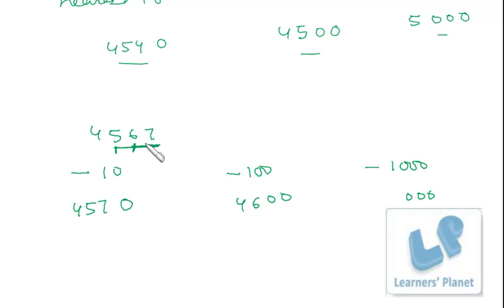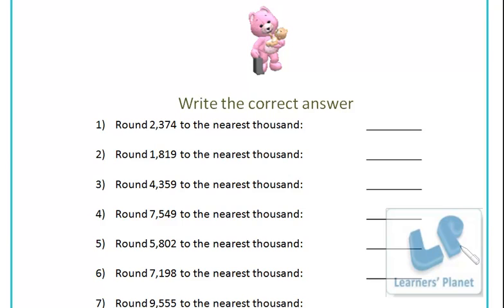For nearest thousand, put up three zeros. The last three digits are more than 500, so add one: four and one is five. So when you are doing rounding off, be very clear - rounding to nearest ten: see the last digit only; for hundred: see the last two digits only; for thousand: see the last three digits.